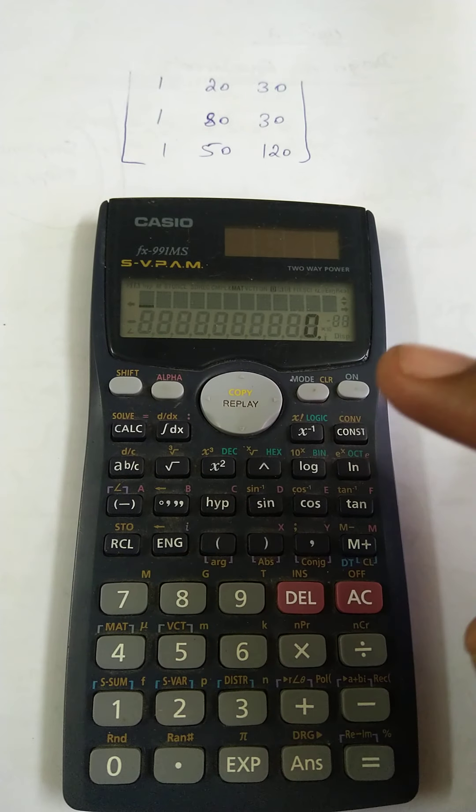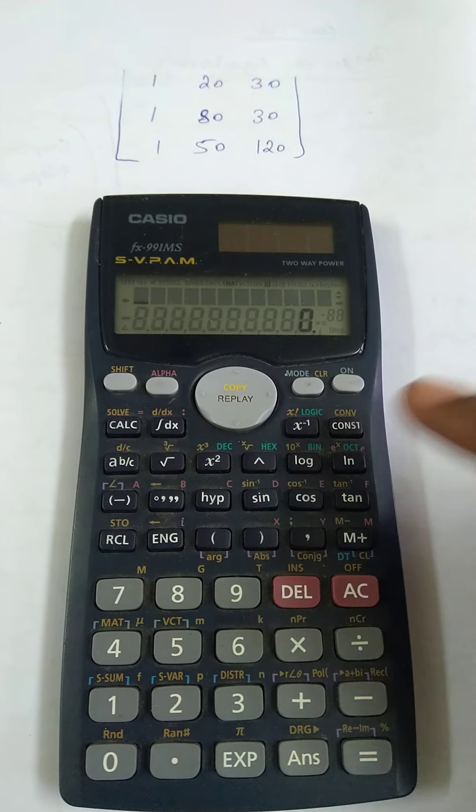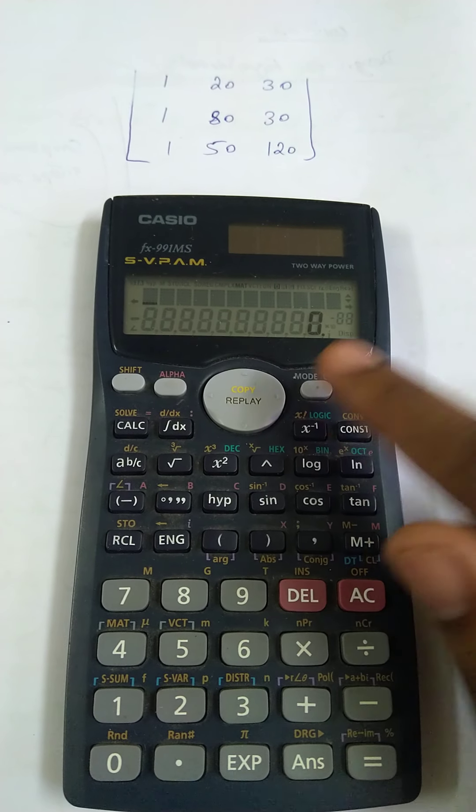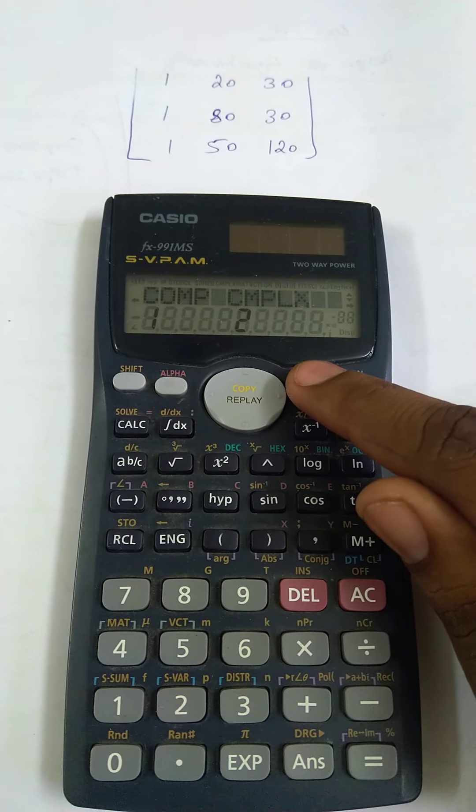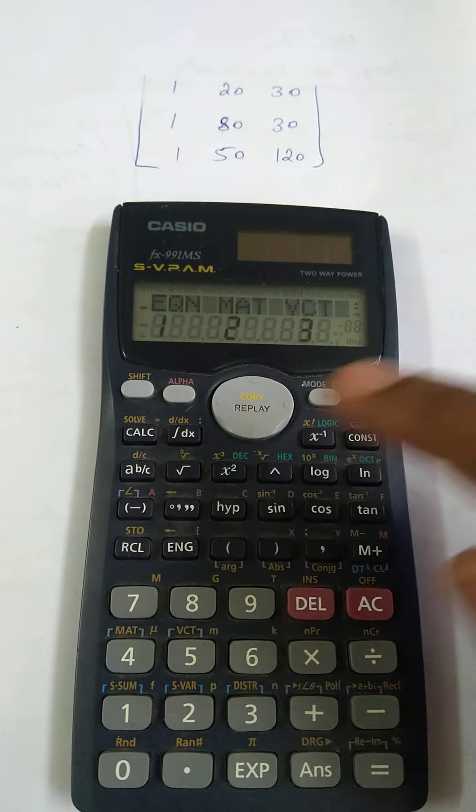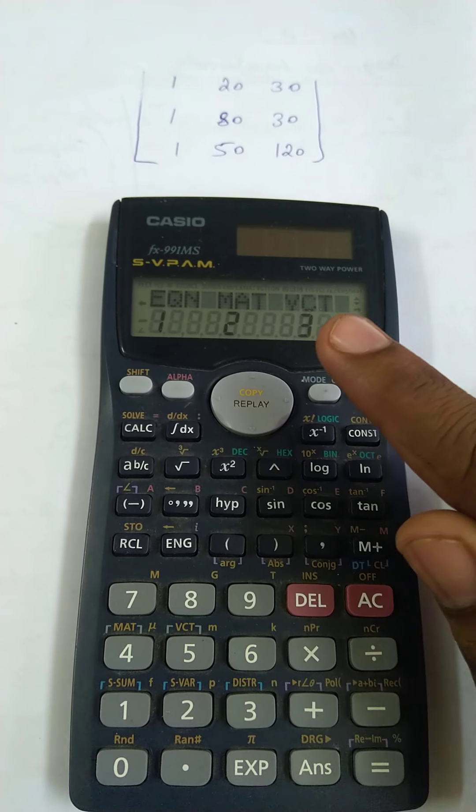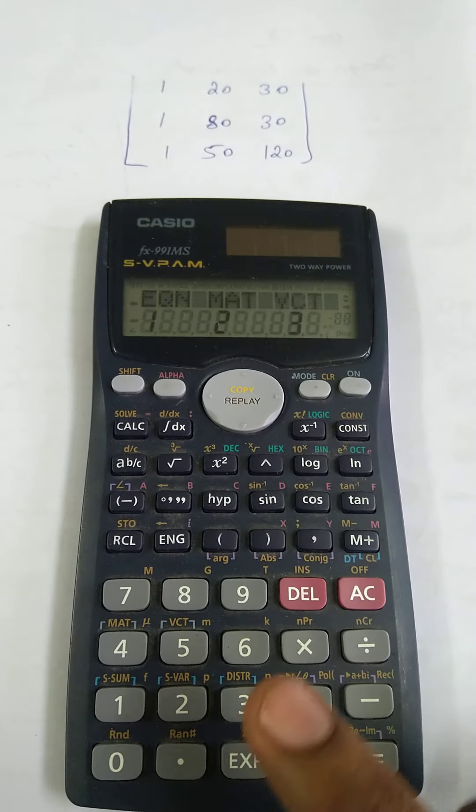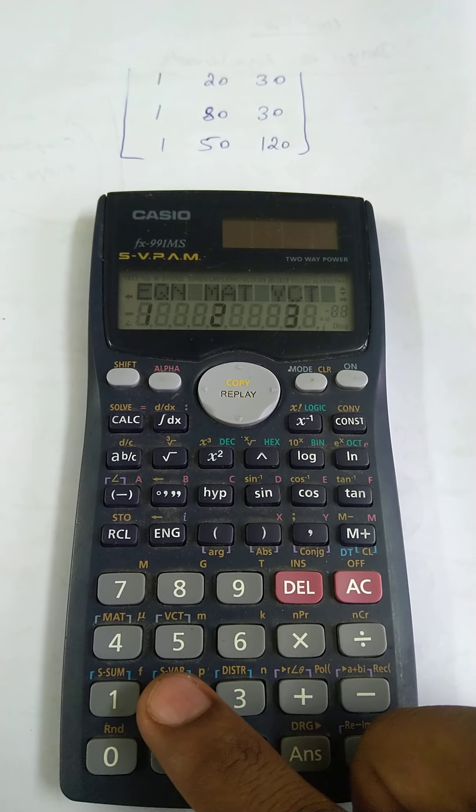First, this is the mode button. Press mode 3 times: 1, 2, 3. You'll see 1 for equation, 2 for matrix, 3 for vector. Press 2 for matrix.